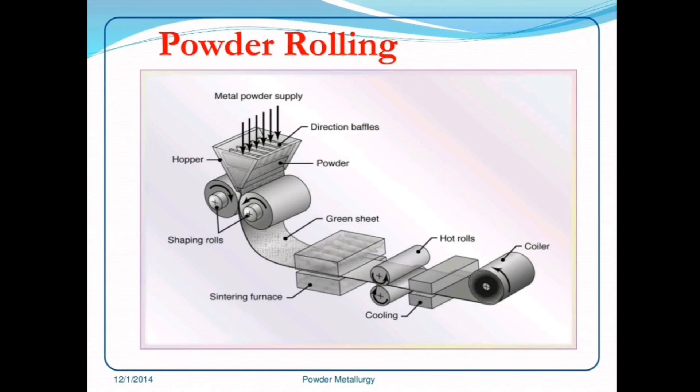Powder rolling: the metal powder is filled into a hopper, and then opposing forces are applied by use of rollers, and sheets are prepared. The prepared sheet is a green sheet, which is then rolled through hot rolls and coiled.